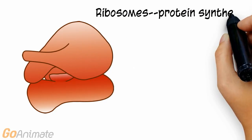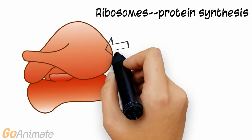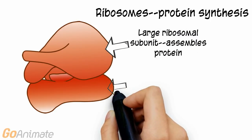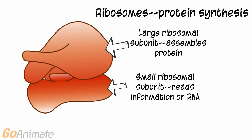Here is a picture of a ribosome. Ribosomes contain two subunits. The small ribosomal subunit reads information for making proteins from RNA. The large subunit assembles polypeptides and proteins by connecting amino acids.